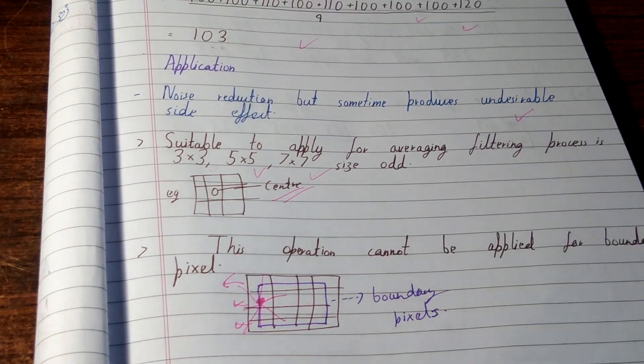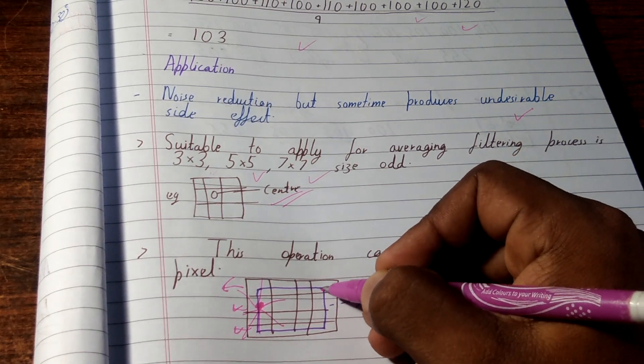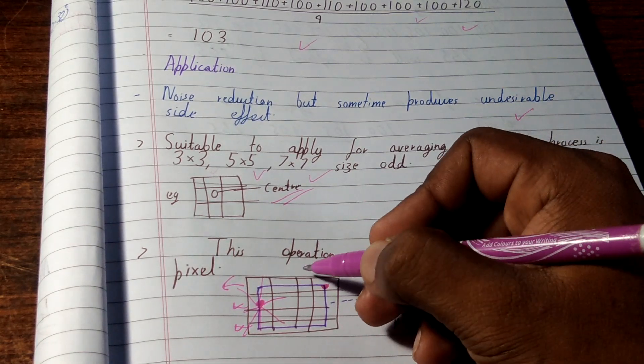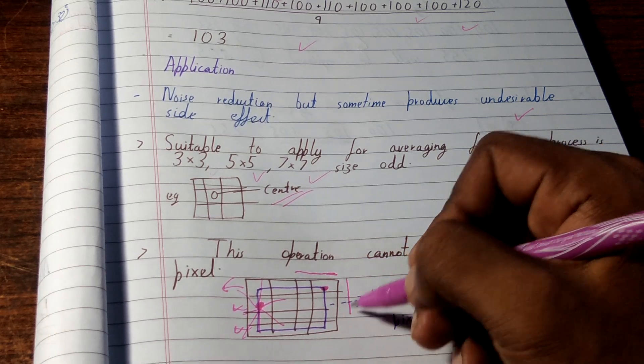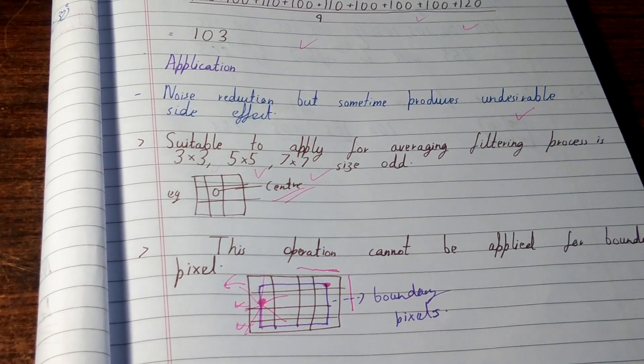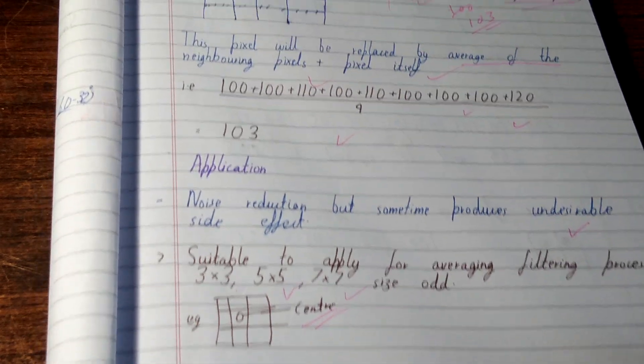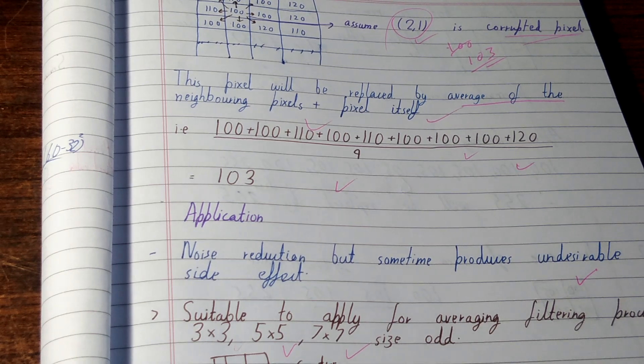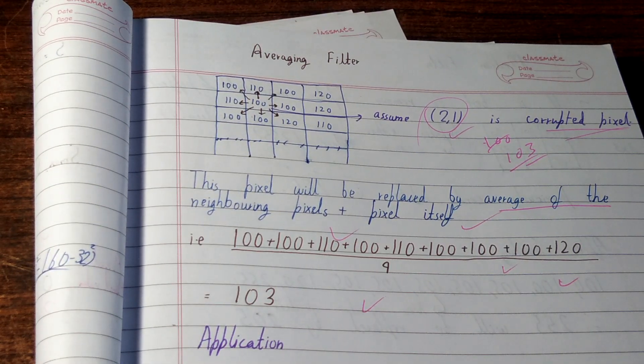For example, if a pixel is corrupted over here, then you have to extend it from here, then from here, and then you can take out the averaging. Then you can use the averaging filter to take out the average value of the corrupted pixel. So this was all about averaging filters. If you like the video, do hit the like button, do consider subscribing, and thanks for watching.